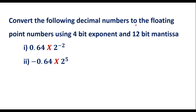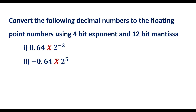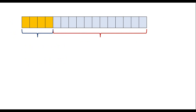Convert the following decimal numbers to floating point numbers using 4-bit exponent and 12-bit mantissa. Before doing the conversion, let me explain the floating point format. The format consists of a 4-bit exponent block and a 12-bit mantissa block, as shown here.